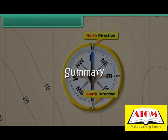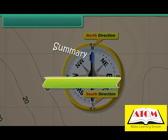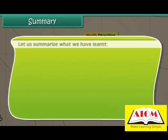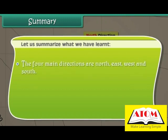Let us summarize what we have learned. The four main directions are north, east, west, and south. A compass is used to find directions.